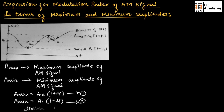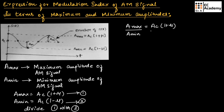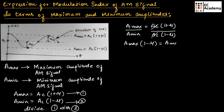Let us divide equation 1 by equation 2. So we can write A maximum equals AC into 1 plus mu, divided by A minimum equals AC into 1 minus mu. Here we can cancel out AC. If we cross multiply these terms, we can write A maximum into 1 minus mu is equal to A minimum into 1 plus mu.